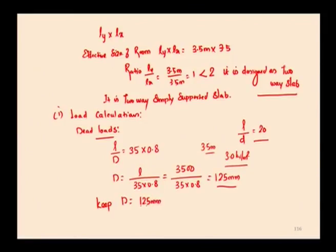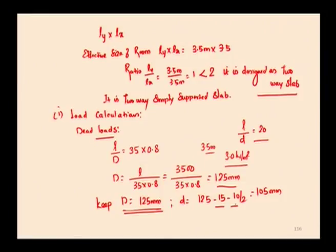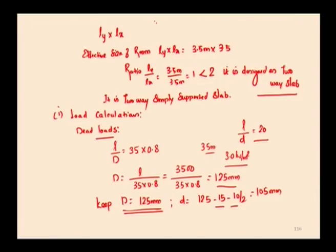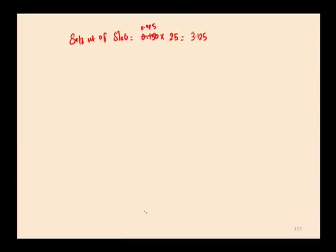The overall depth D is taken as 125 mm. The effective depth d = 125 − 15 − 10/2 = 105 mm, where 15 mm is the clear cover and 10 mm is the bar diameter. The self-weight of the slab = 0.125 × 25 = 3.125 kN/m².